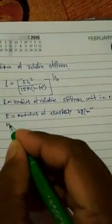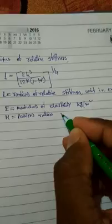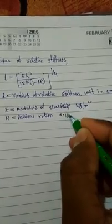And mu is Poisson's ratio. For concrete, the value of Poisson's ratio is generally taken as 0.15.